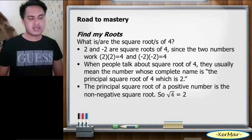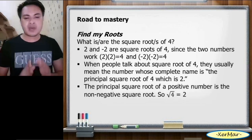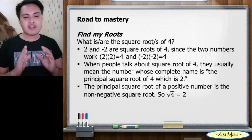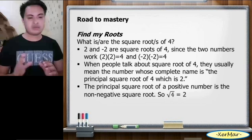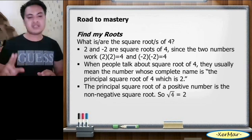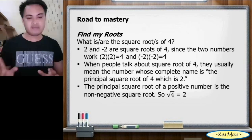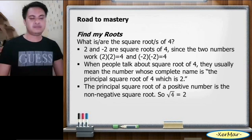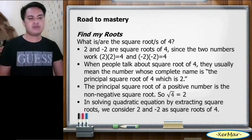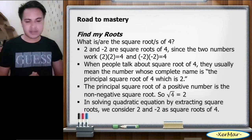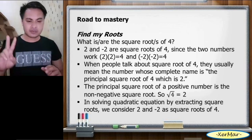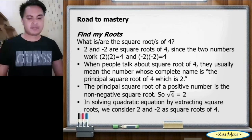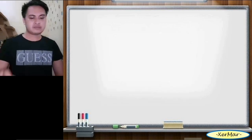The principal square root of a positive number is the non-negative square root. So the square root of 4 equals 2. Again, 2 is the positive or principal square root of 4. Now, in solving a quadratic equation by extracting square roots, we consider both 2 and negative 2 as the square roots of 4.